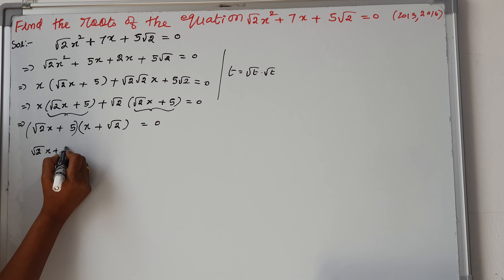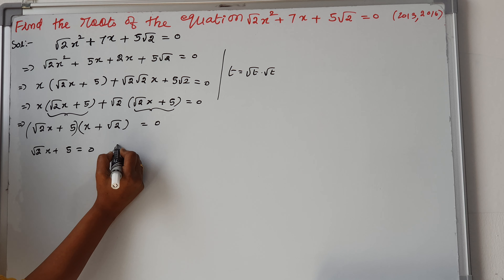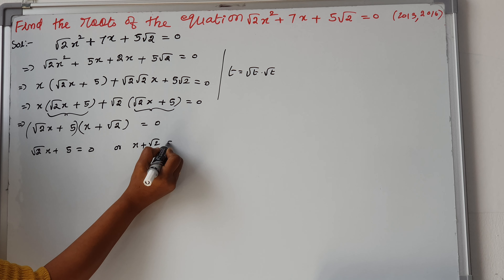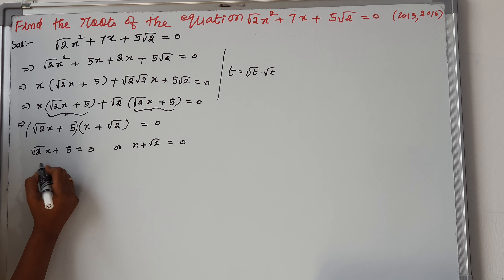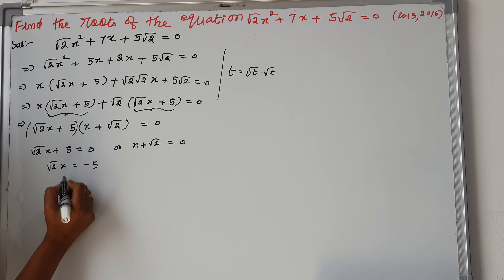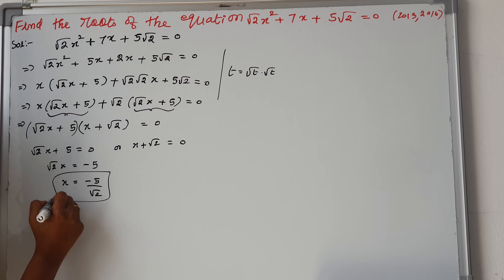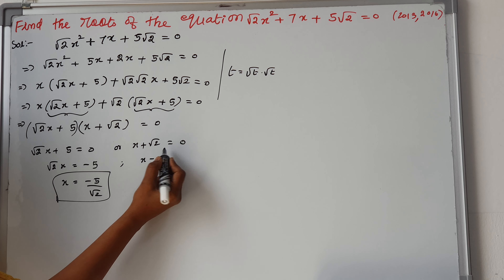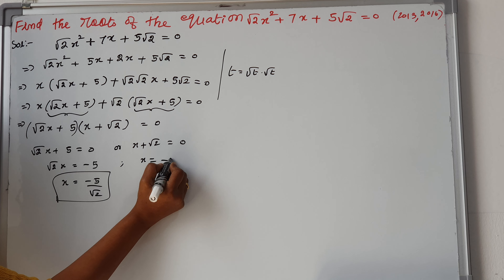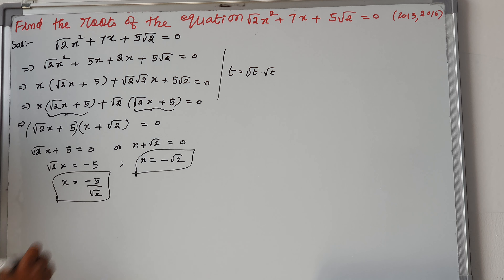So, root 2 x plus 5 is equal to 0 or x plus root 2 is equal to 0. From the first factor: root 2 x is equal to minus 5, so x is equal to minus 5 by root 2. And x is equal to minus root 2 are the two roots of the given quadratic equation.